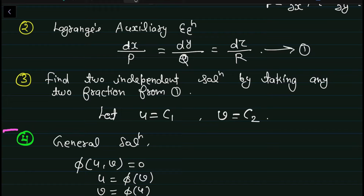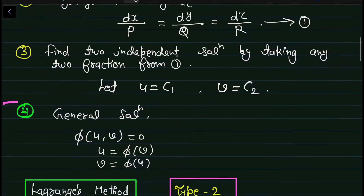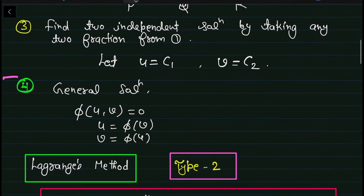We find two independent solutions in the form U and V, which are functions of X, Y, Z. We get U = C1 and V = C2.